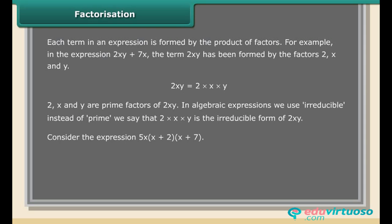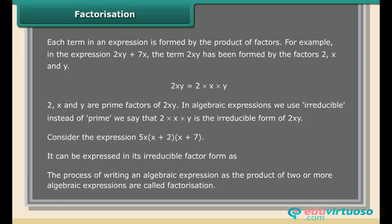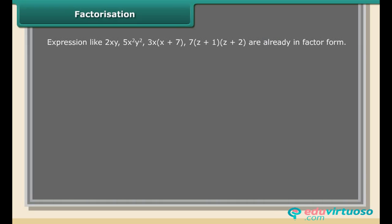Consider the expression 5x(x + 2)(x + 7). It can be expressed in its irreducible factor form. The process of writing an algebraic expression as the product of two or more algebraic expressions is called factorization. Expressions like 2xy, 5x²y², 3x(x + 7), and 7(z + 1)(z + 1)(z + 2) are already in factor form.